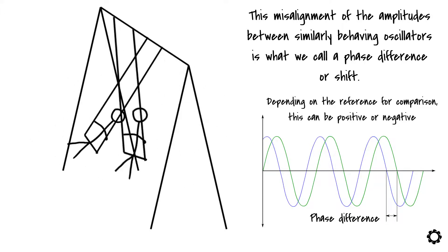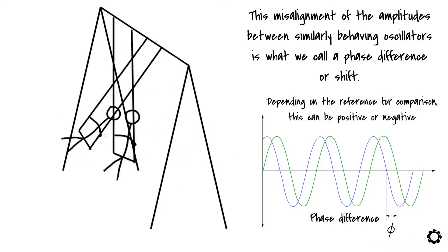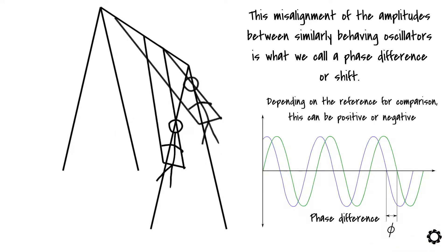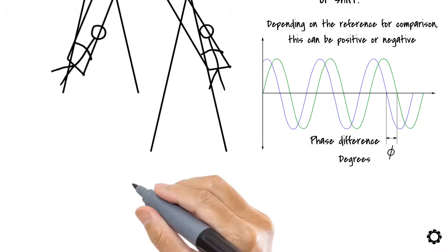Just like an oscillator's amplitude, we can measure the phase in numerous ways such as in distance, time or degrees. But in the engineering field, the most common way to measure phase is by using degrees.